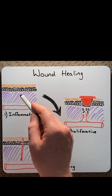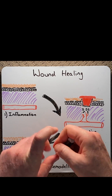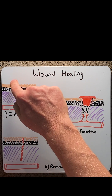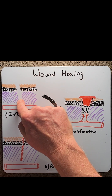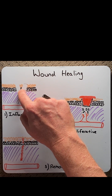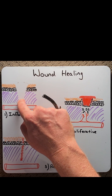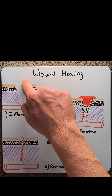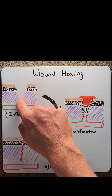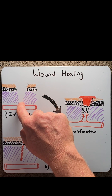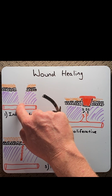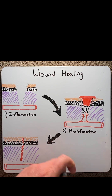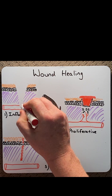let's say you prick yourself with a thorn and there's tissue destruction in your skin — we have a whole lot of tissue that is damaged as well as a blood vessel that is ruptured. Therefore,